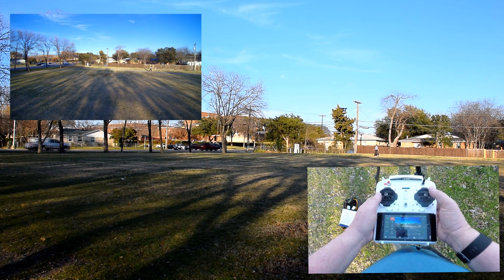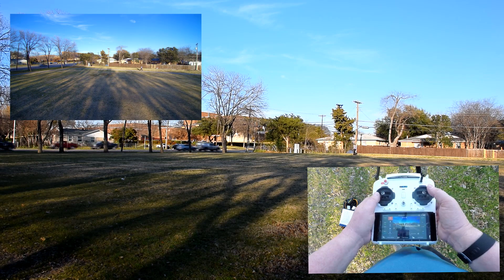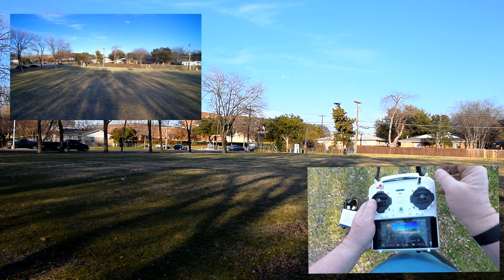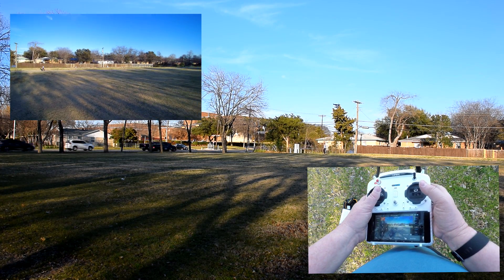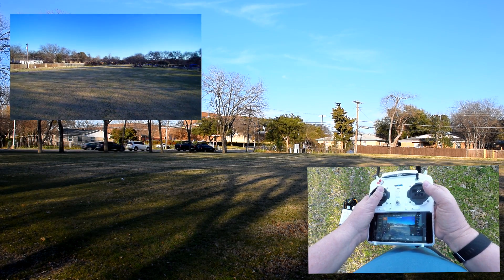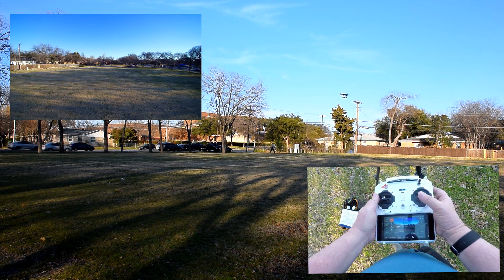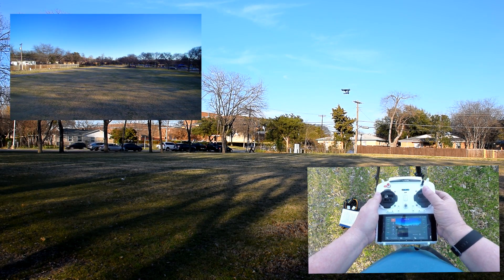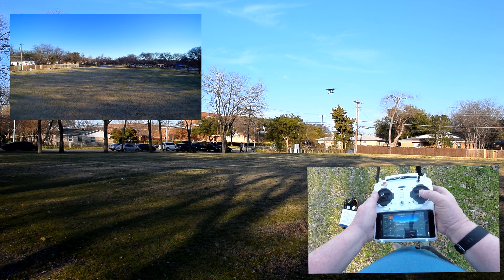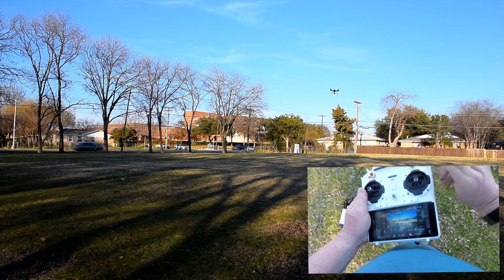Most pilots do all their Q500 flying in Smart or Angle mode. The primary difference between the two modes is the focal point from which the aircraft interprets your stick commands. This difference is referred to as flight orientation. In Smart Mode, flight orientation is based on where the transmitter is pointing when you first take off.